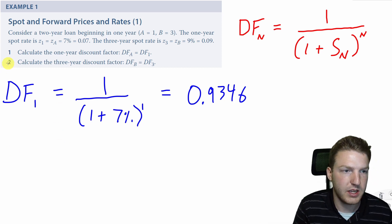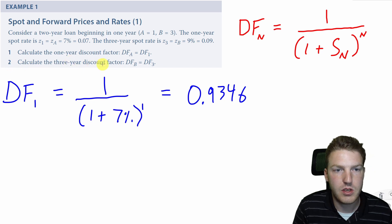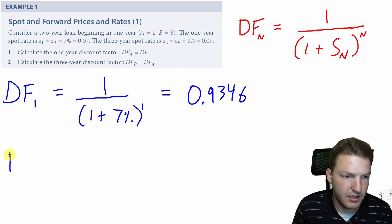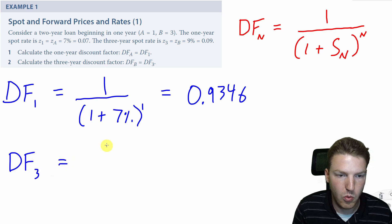Now let's solve the second one. Calculate the 3-year discount factor. So this time we're going to say DF3 is equal to $1 over 1 plus the 3-year spot rate, which is 9%.